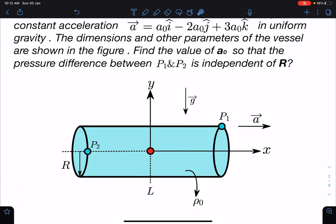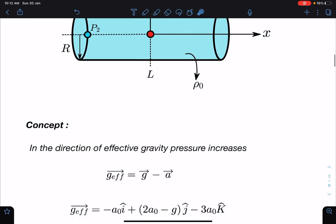Vector a is given for the vessel in 3D and there is gravity as well. There are two points on the cylinder where pressure is P₁ and P₂, and we have to find out that pressure difference between them should become independent of radius R of the cylinder. So here the concept part is: